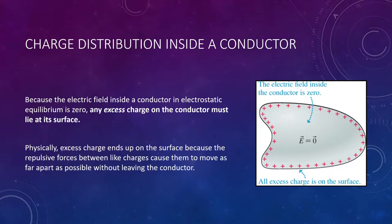We talked about this before in a different way — physically, because maybe it's all positive charges, these like charges repel one another, so they're going to repel each other to the furthest extent they can go, which would be the surface of the conductor. So not only is the electric field inside a conductor zero, but all of the excess charge resides on the surface.